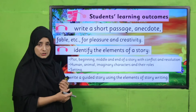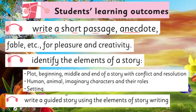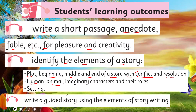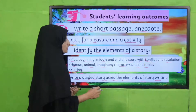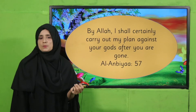So what are our student learning outcomes today? Write a short passage — anecdote, fable, etc. — for pleasure and creativity. Identify the elements of a story: plot, beginning, middle, and end of a story with conflict and resolution. Recognize human, animal, and imaginary characters and their roles. Understand setting. Write a guided story using the elements of story writing. Today we are going to cover all of these.